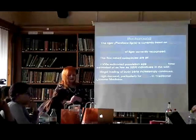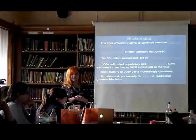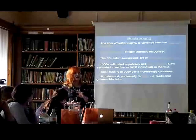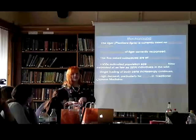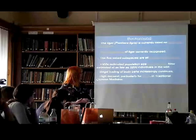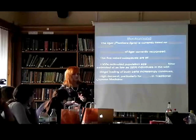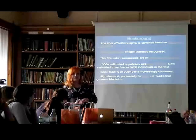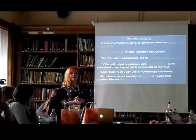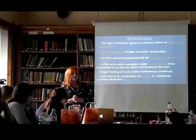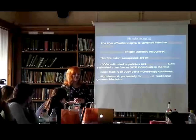The tiger is currently listed on Appendix 1 of CITES and there are currently nine subspecies recognised, three of which are extinct and one of which, the Amur tiger, only lives in captivity. All five remaining subspecies are critically endangered. In the 1900s the estimated population size was around 100,000 and now we're down to around 3,200.